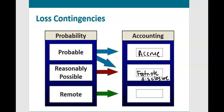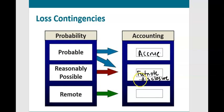If the probability of paying out is high but we cannot make a reasonable estimate of how much we'll have to pay out, then we can't book the journal entry, but we still give footnote disclosure to make sure we're telling investors what we know about this probable loss contingency.